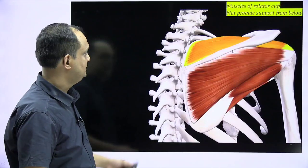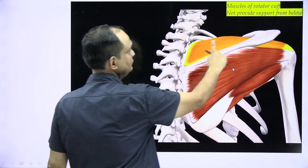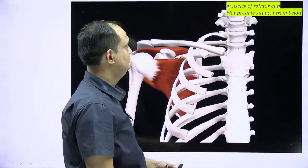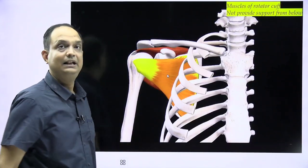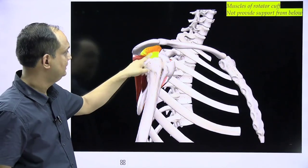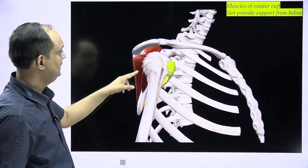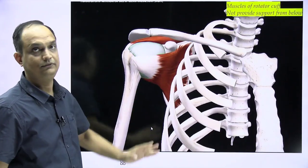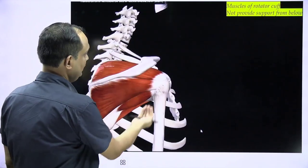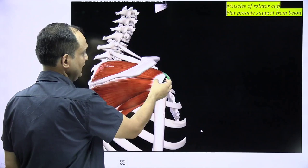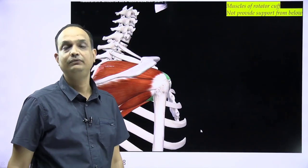In the video you can see the arrangement: supraspinatus, infraspinatus, and teres minor from the posterior side, and subscapularis from the anterior side going to the lesser tubercle. These muscles form a cuff supporting the upper part of the humerus at the shoulder joint, but they lie outside the joint. There is no muscle support from below, so the head of the humerus has a higher tendency to dislocate inferiorly.